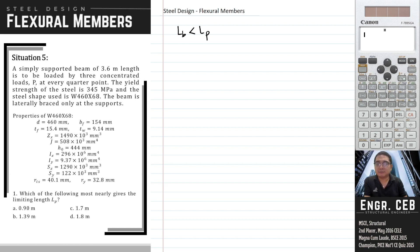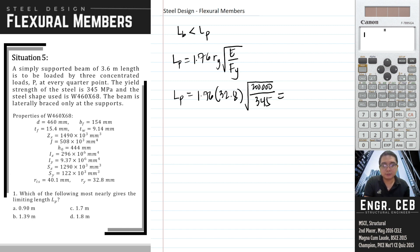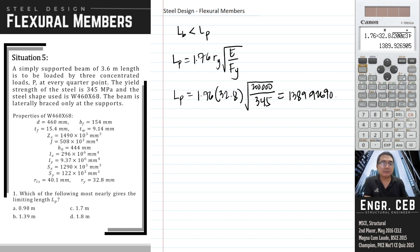Let us compute for Lp. The formula is Lp = 1.76 · ry · √(E/Fy), where ry is the radius of gyration of the section with respect to the Y-axis. Substituting: 1.76 times ry = 32.8, times the square root of E over Fy. Lp is 1,389.93 millimeters, or 1.39 meters. That is letter B.